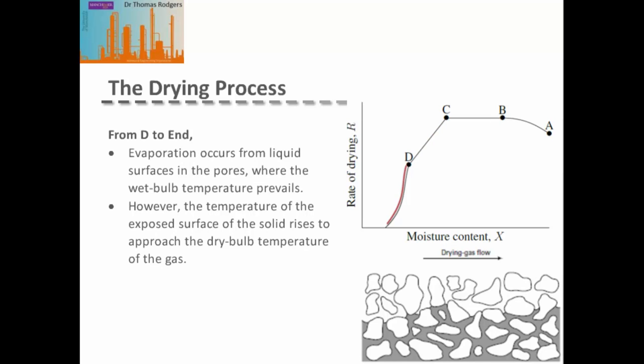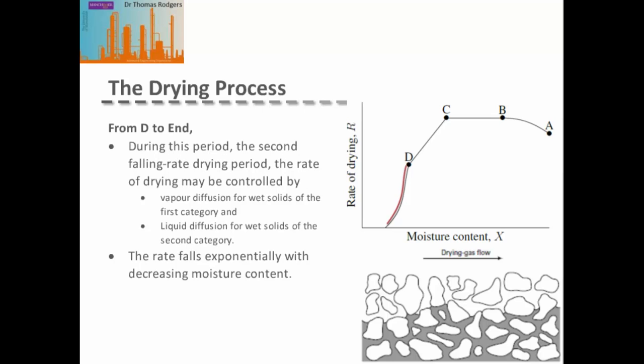The region from D to the end is the second falling rate period. Evaporation occurs from the liquid surface in the pores where the wet bulb temperature prevails; however, because there is so much exposed solid surface, the surface temperature of the solid increases and approaches the dry bulb temperature of the gas. The drying rate in this region may be controlled by vapor diffusion through the pores for porous solids, or by liquid diffusion through the solid for non-porous solids. As a result, the drying rate tends to fall exponentially with decreasing moisture content.